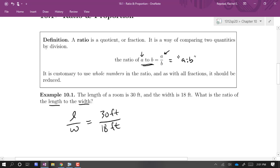And we can reduce. Note that feet over feet cancel, right? So there's not going to be any units here. 30 is equal to 5 times 6. 18 is 3 times 6. So those 6s cancel. And we get 5 thirds or 5 to 3 is the ratio. So there are no units on a ratio.